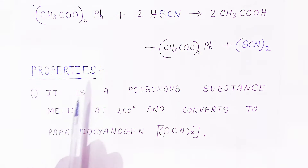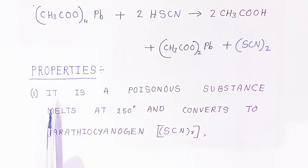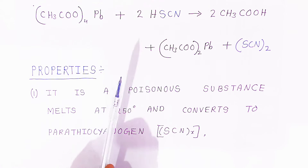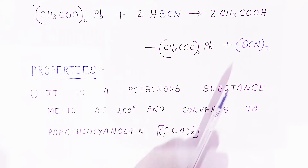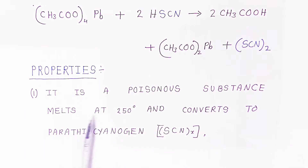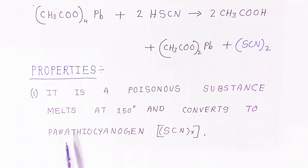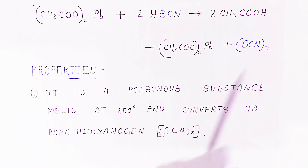Now we are going to see the properties of thiocyanogen. It is a poisonous substance. It melts at 250 degrees and converts to parathiocyanogen.